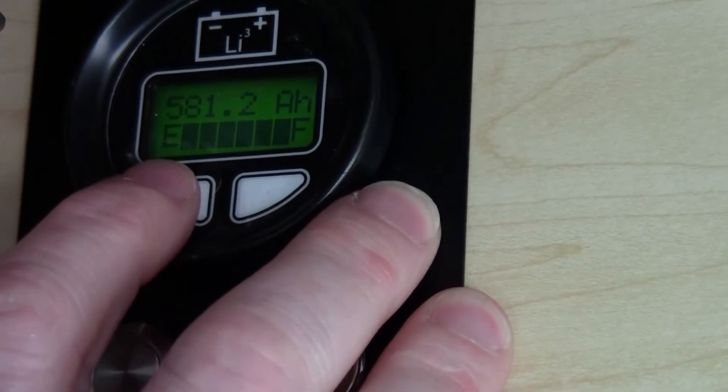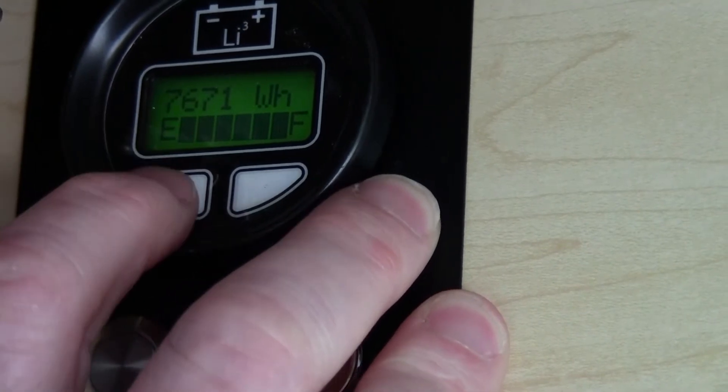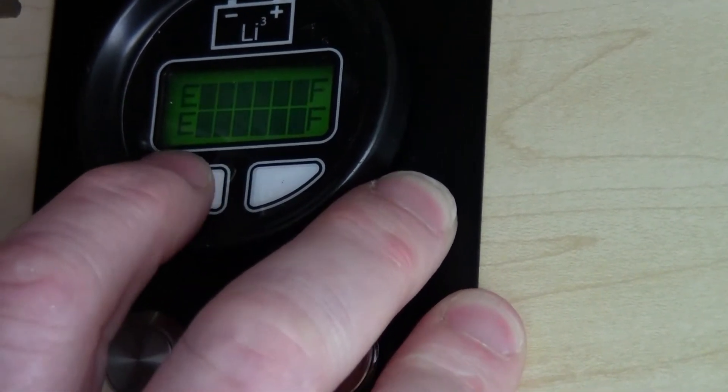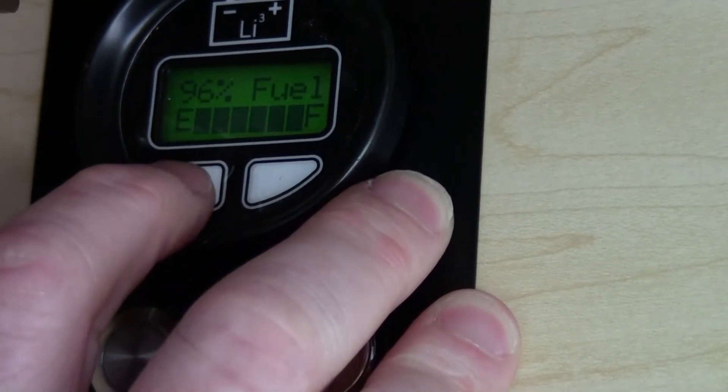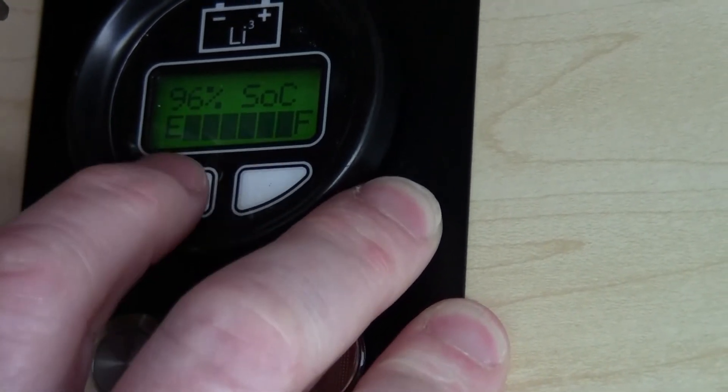We're going to change the top line right now. We're at 581.2 amp hours capacity or 7,671 watt hours. This is our fuel gauge. In percentage of charge, this gives us a 96% state of charge.